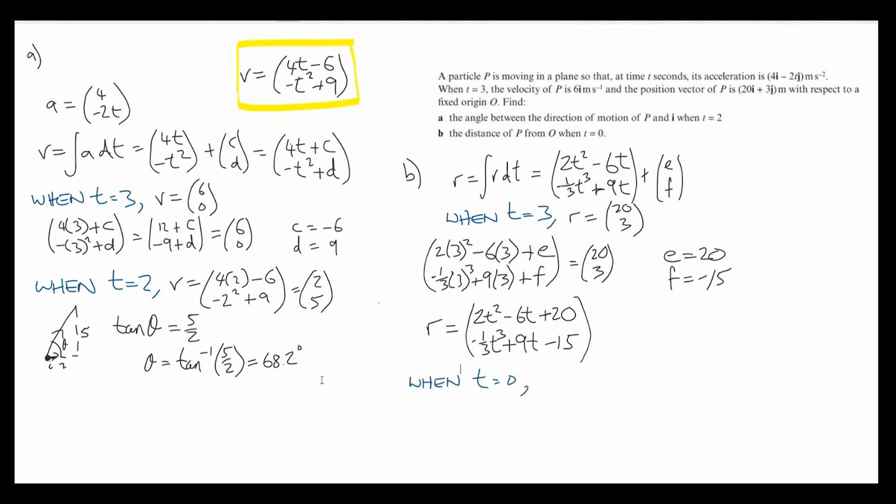And we can see here that when t equals 0 at the beginning of the journey, our position vector is going to be 20, negative 15. Since we want to know the distance from the origin to this particular point, we're just going to use Pythagoras on these two components, and we get a distance of 25 meters. The original position is 25 meters from the origin.